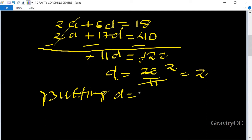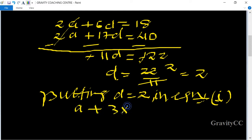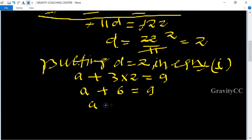d = 2 in equation first. So the first equation is a + 3d, with d = 2, equals 9. So a + 6 = 9, therefore a = 9 - 6 = 3.